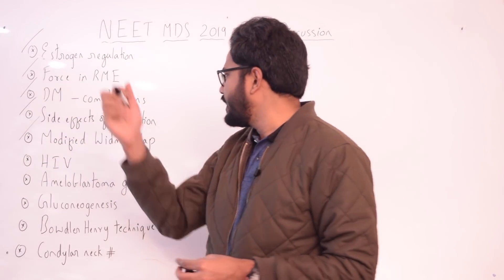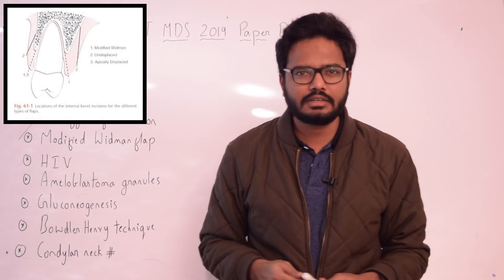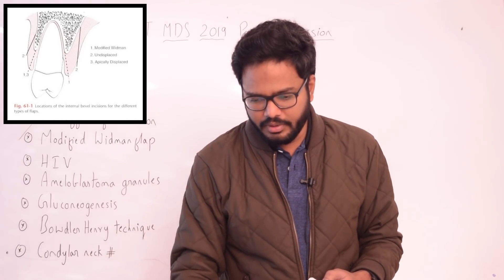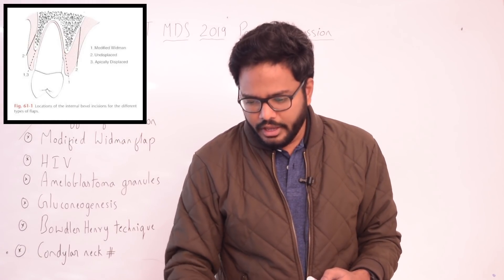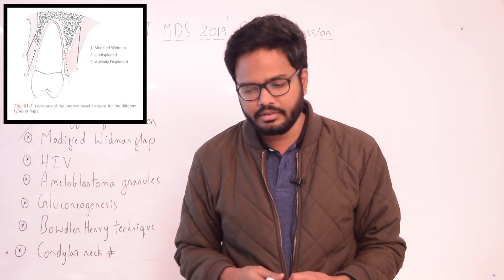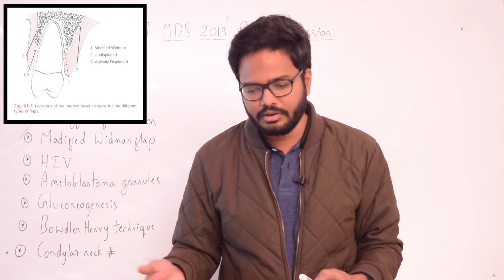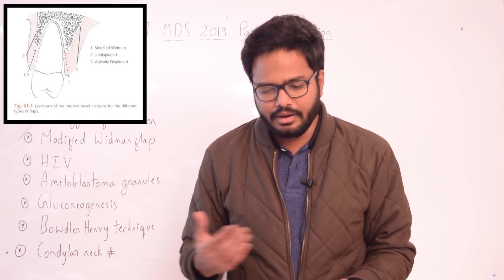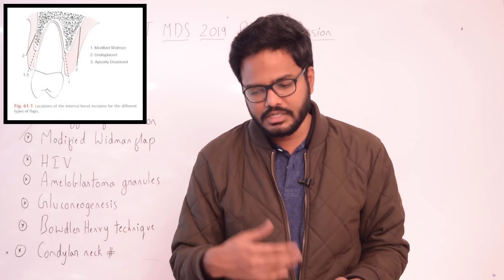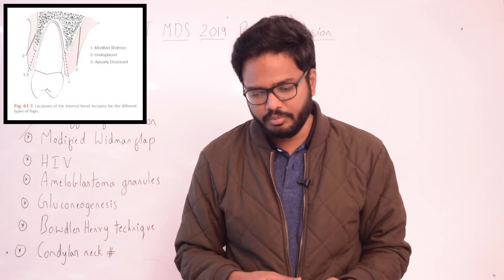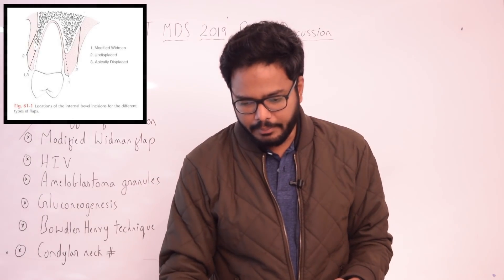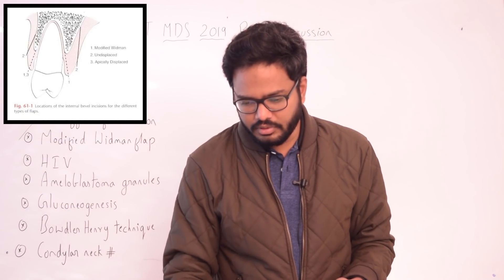The next topic is the modified Widman flap and its third incision. In 1965, it is mentioned that Morris revived a technique described earlier in periodontal literature, which he called the unrepositioned mucoperiosteal flap. Essentially the same procedure was presented in 1974 by Ramfjord and Nissle, who called it the modified Widman flap.